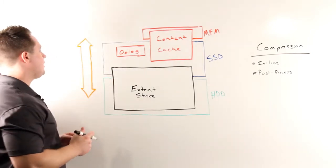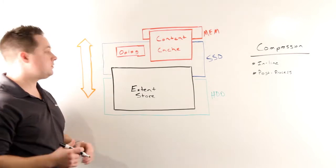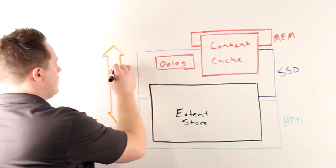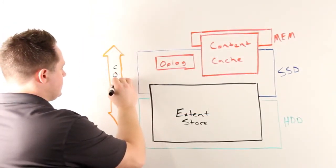On the left-hand side is what we call our capacity optimization engine. This is responsible for performing all of the compression, otherwise known as the COE.